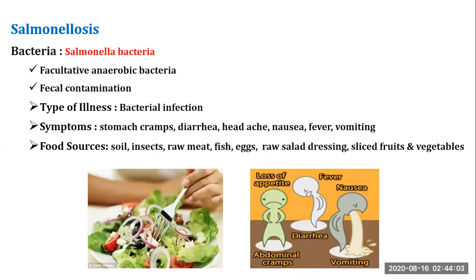Another disease is salmonellosis. The bacteria mainly responsible for that is Salmonella, which is a facultative anaerobic bacteria, and it mainly happens due to fecal contamination. For example, eggs are a very common source of Salmonella bacteria, as the bacteria can be contained in the shell. Symptoms include stomach cramps, diarrhea, headache, nausea, and vomiting. Food sources include soil, insects, raw meat, raw salad dressing, sliced fruits and vegetables, and raw salad.